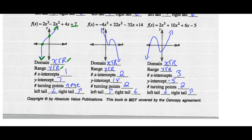For the next graph: domain and range are both any real number. There are two x-intercepts — one right on the x-axis and a second one. The y-intercept is positive 14. There are two turning points — one right on the x-axis and the other nearby. The left tail is going up and the right tail is going down.